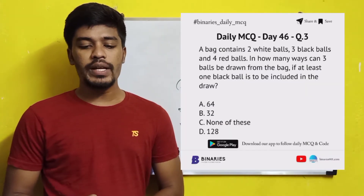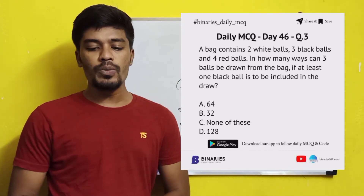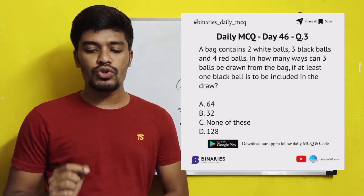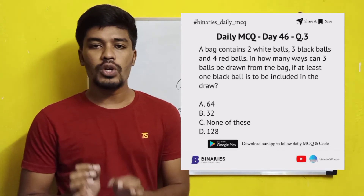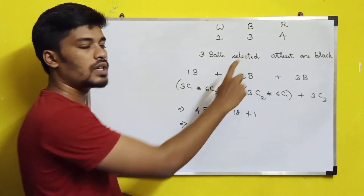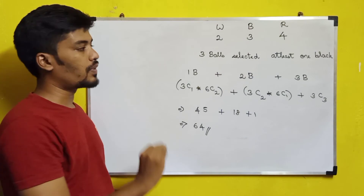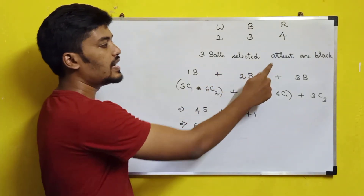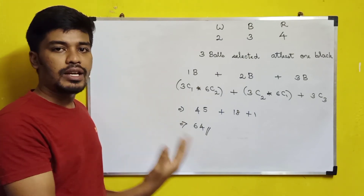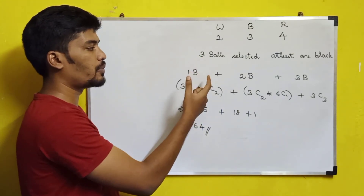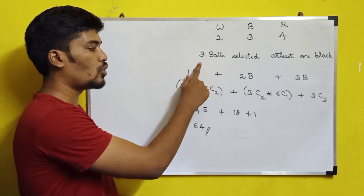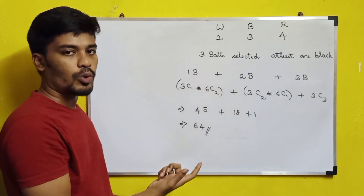The third question is: a bag contains 2 white balls, 3 black balls, and 4 red balls. In how many ways can 3 balls be drawn from the bag if at least one black ball must be included? At least one black means a minimum of one and a maximum of three black balls in the selection.